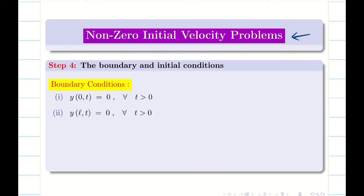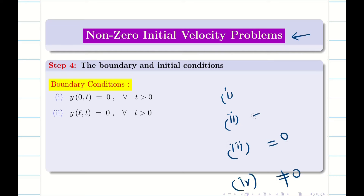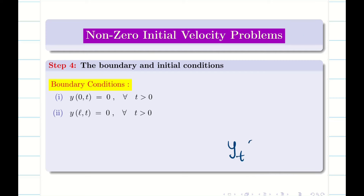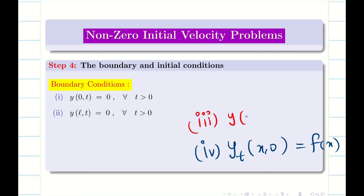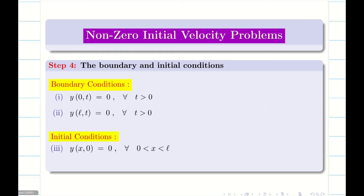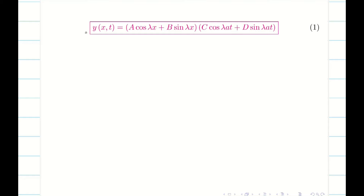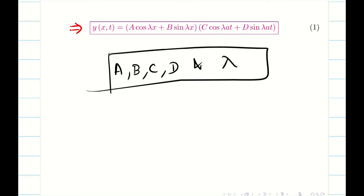Step 4: we are going to write the boundary and initial conditions. The first two boundary conditions will never change. Only the initial conditions are going to change. Since the problem has non-zero initial velocity, when you write the four conditions, the 4th boundary condition should be non-zero and all the remaining should be 0. Since the initial velocity is non-zero, that is some f(x), it is going to be condition 4. When the velocity is non-zero, the displacement is going to be 0. My aim is to find the constants A, B, C, D, and lambda — 5 unknowns from equation 1 to give the final solution.